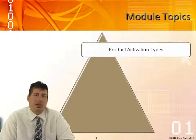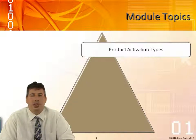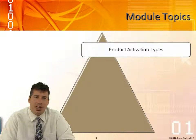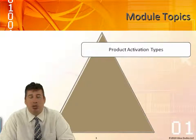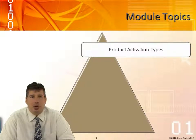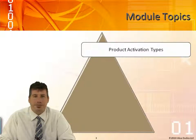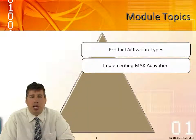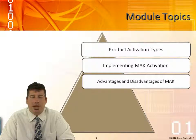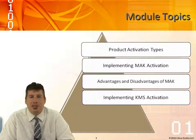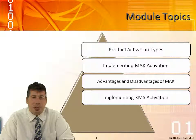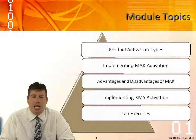Product activation types is one of the things we're going to be looking at. When we're dealing with Windows Server 2008, Windows Vista, or Windows 7, they're all going to have to be activated. Activation unlocks a lot of different features that you won't be able to use if you don't register your product. We'll look at implementing the MAK — the Multiple Activation Key — and the KMS — the Key Management System — including the differences, advantages, and disadvantages of each. We also have the lab and exercises.